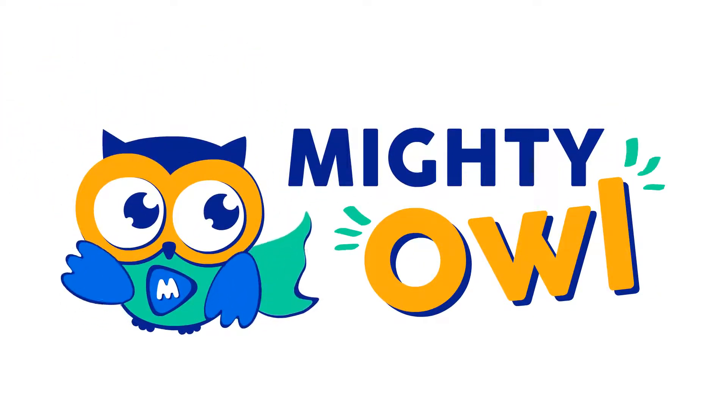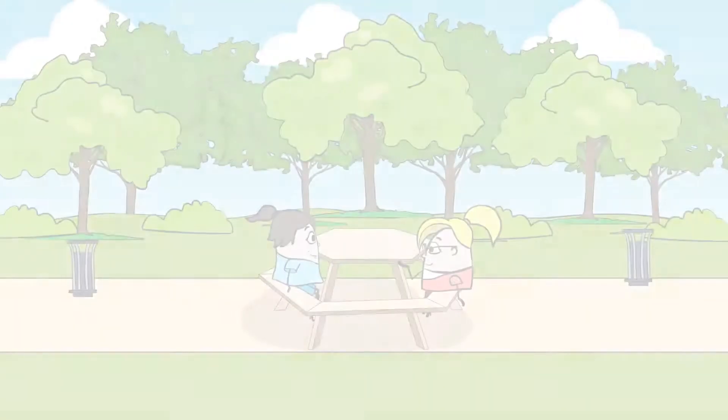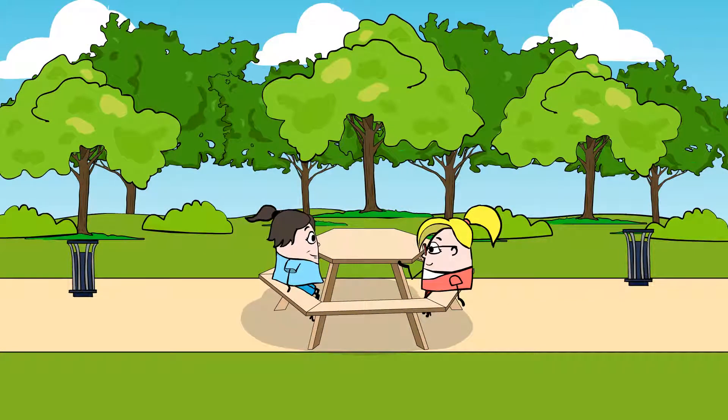Hello, this is Mighty Owl. Mia and Jenny are sitting on the picnic tables and it looks like they're pretty busy discussing something. I wonder what they're talking about. Shall we check it out?